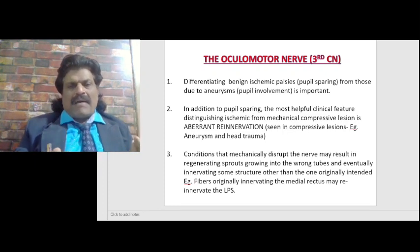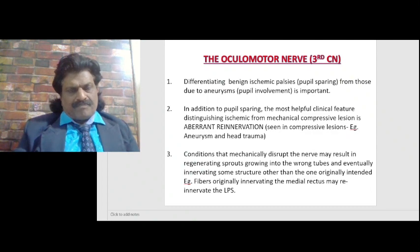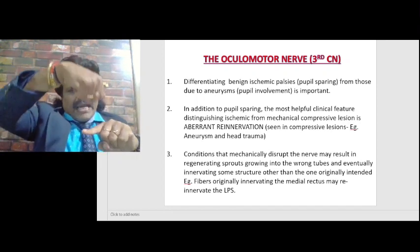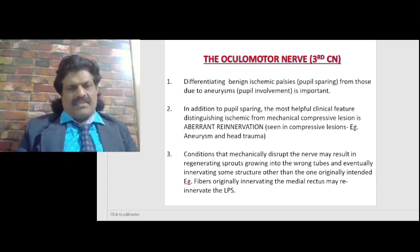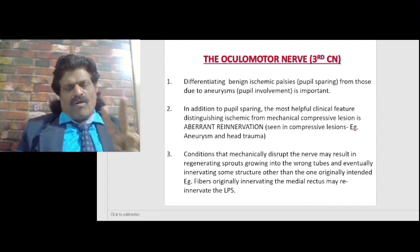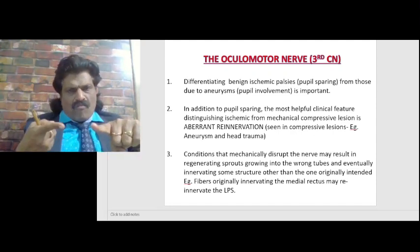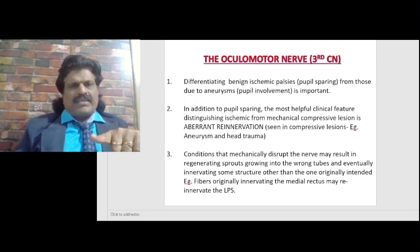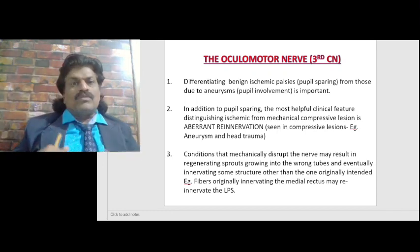Differentiating benign ischemic palsies — that is diabetes-related — from those due to aneurysms which are dangerous, pupillary involvement is very important. In addition to pupillary sparing, the most helpful clinical feature distinguishing ischemic from compressive lesions is aberrant re-innervation, which is seen in compressive lesions such as aneurysm and head trauma. In compressive third nerve palsy, pupillary fibers are the first to get affected and aberrant re-innervation is produced.